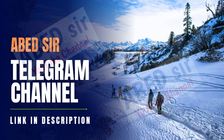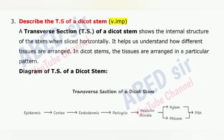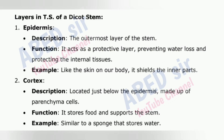Next important long question is 3: Describe the T.S. of a dicot stem. A transverse section of a dicot stem shows the internal structure of the stem when sliced horizontally. It helps us understand how different tissues are arranged. In dicot stems, the tissues are arranged in a particular pattern. 1. Epidermis — the outermost layer of the stem. Function: it acts as a protective layer, preventing water loss and protecting the internal tissues. Example: like the skin on our body, it shields the inner parts.